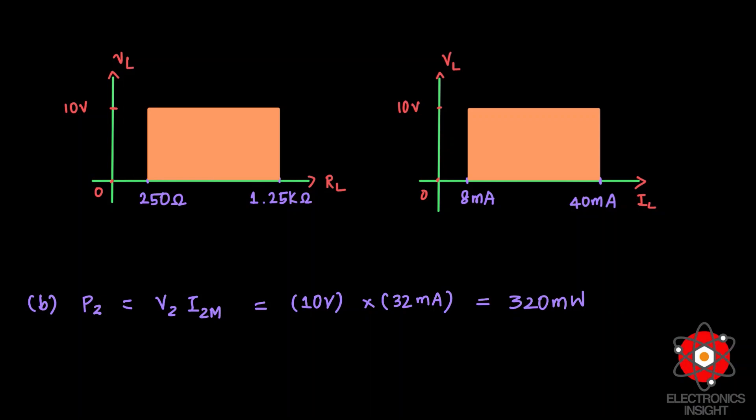This problem demonstrates load regulation: even when load resistance is changing, a constant load voltage of 10 volts is maintained across the Zener diode. Therefore, the Zener diode acts as a perfect voltage regulator in this case.